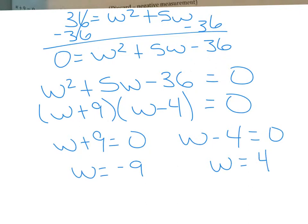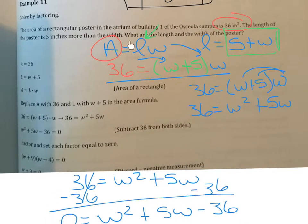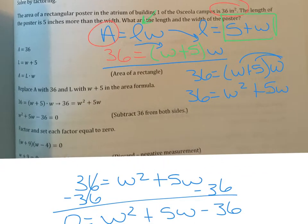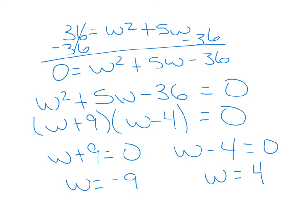In a pure math question both solutions are valid, but this was a word problem. We used w for width. We have to reject w equals negative 9 because the width of a rectangle cannot be negative. So our width equals 4.